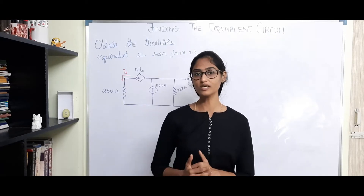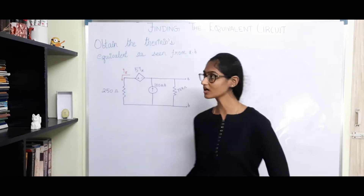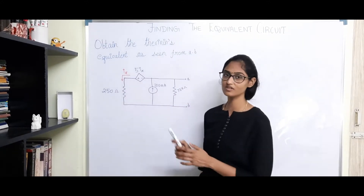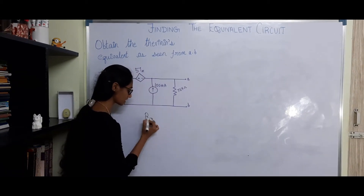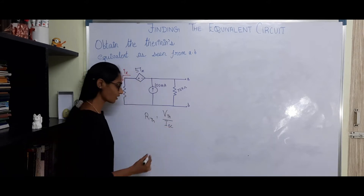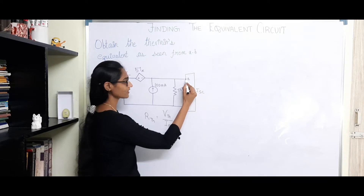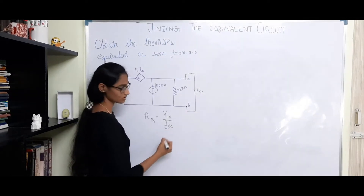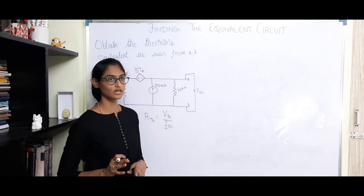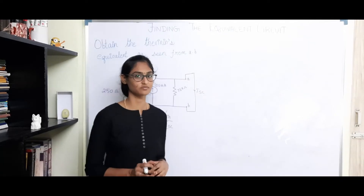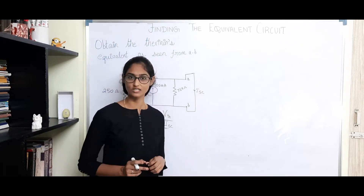In this video, we will be discussing how to find Thevenin's equivalent when we have dependent sources. When we have dependent sources, we cannot nullify the sources as such and then find Thevenin's equivalent resistance. To find Thevenin's equivalent resistance, we need to find Thevenin's equivalent voltage and the short circuit current. When we short circuit the load terminals, the current flowing through that loop is called the short circuit current or Norton's current. In later videos, we will cover Norton's equivalent circuit.